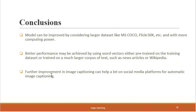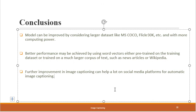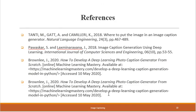In conclusion, this model can definitely be improved with a larger dataset and more computing power, and better performance can be achieved by training on Wikipedia or news articles with a larger corpus of text. Image captioning has practical applications in social media platforms — for automatic captioning when you click an image on a mobile device or on platforms like Flickr. These are the references I used, and with that I conclude my presentation. Thank you.